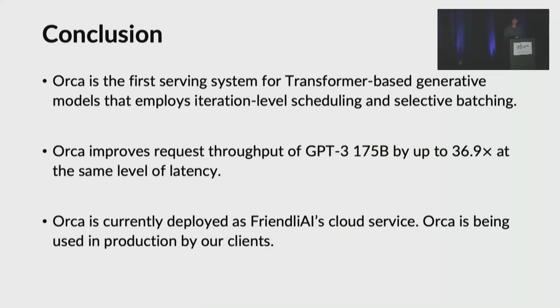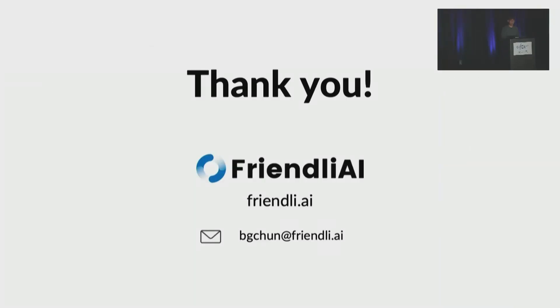In summary, large-scale transformer-based generative models are important workloads to serve efficiently. In this work, we propose Orca, the first serving system for such models that employs iteration-level scheduling and selective batching to improve performance. Orca improves the request throughput of GPT-3 175 billion by up to 36.9 times at the same level of latency. Orca is currently deployed as FriendlyAI's cloud service, and our clients are using Orca in production. Thank you for listening. I'm happy to take any questions.